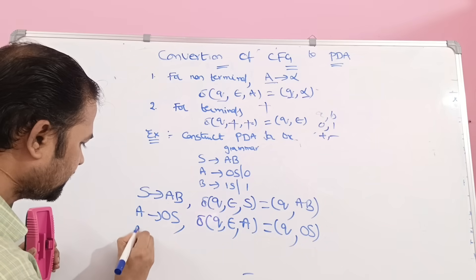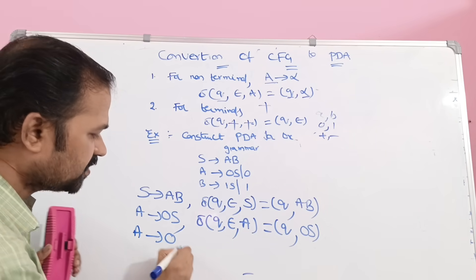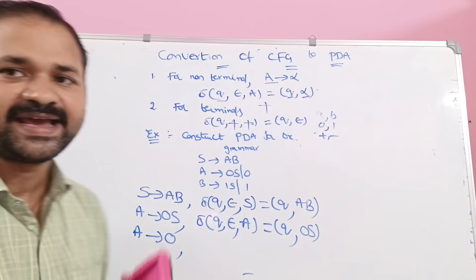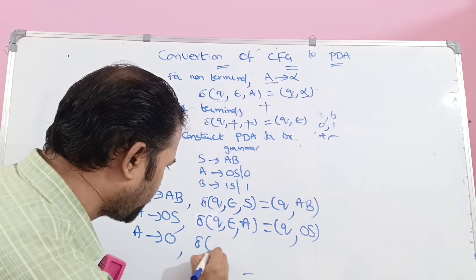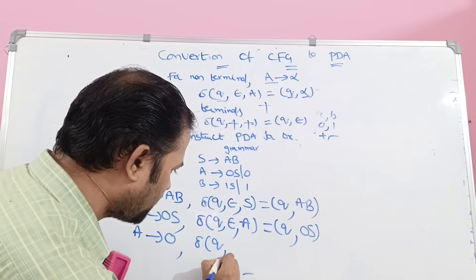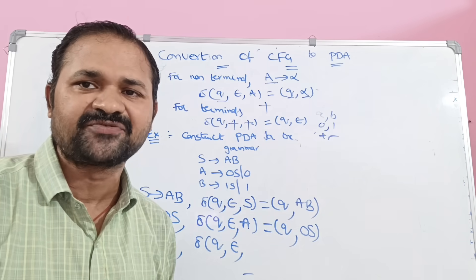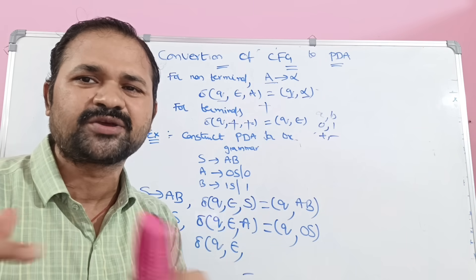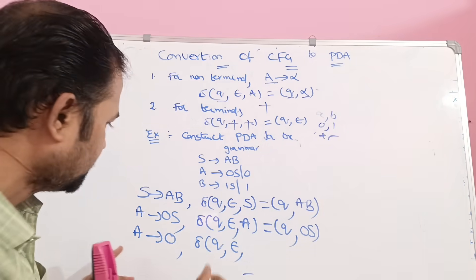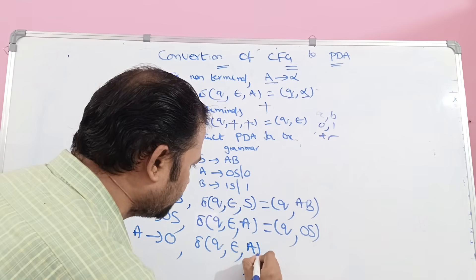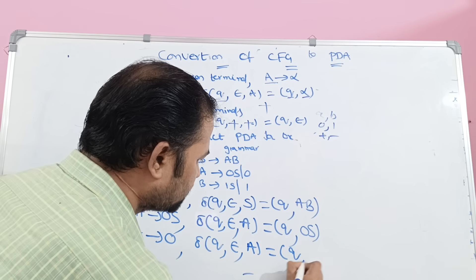Next, for A implies 0, we can write it as delta of (Q, epsilon, A) = (Q, 0). Only one state is enough — it may be Q or Q0 or Q1, it is your choice. So epsilon, A equals Q, 0.